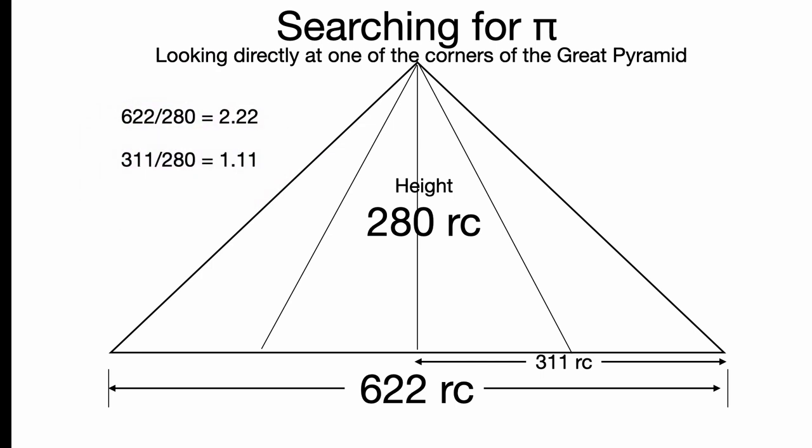So the half of that would be 311, obviously. So I thought, well, maybe I can get some Pi out of this. 622 divided by 280, hey, 2.22. Interesting. It's not Pi. 311 divided by 280, you know, the half base divided by the height that's 1.11. Interesting, but still not Pi. And then if you take the height divided by the half base, it's 0.9 exactly. Some very interesting numbers, but not Pi.